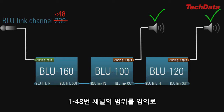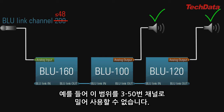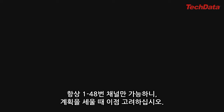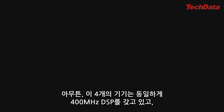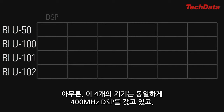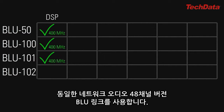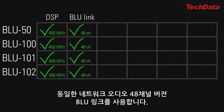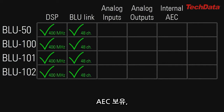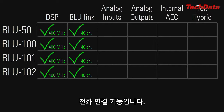Please note that you cannot change this range to anything other than 1 through 48. For example, you cannot slide the range up to channels 3 through 50. It's always 1 through 48, so you should plan accordingly. These 4 devices have identical DSP — 400 MHz — and identical networked audio, the 48-channel version of Blue Link. What sets them apart from one another is their I/O count, AEC capability, and phone line connectivity.